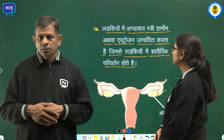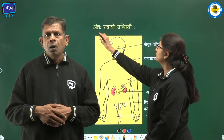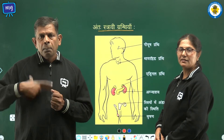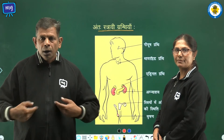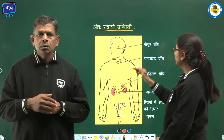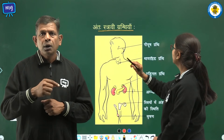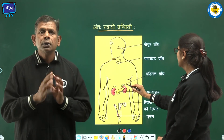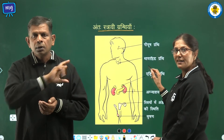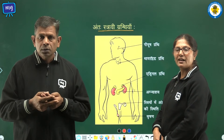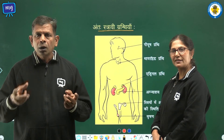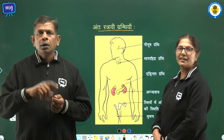अंतःस्त्रावी ग्रंथियाँ — मनुष्य में वृक्षण और अंडाशय के अलावा भी अन्य अंतःस्त्रावी ग्रंथियाँ पाई जाती हैं। चित्र में देखिये — यह प्यूष ग्रंथि, थायरॉइड ग्रंथि, एड्रिनल ग्रंथि, अग्नाशय ग्रंथि — ये सब मनुष्य में पाई जाने वाली अंतःस्त्रावी ग्रंथियाँ हैं, जो भिन्न-भिन्न हार्मोन स्त्रावित करती हैं और जिनका अलग-अलग कार्य होता है।